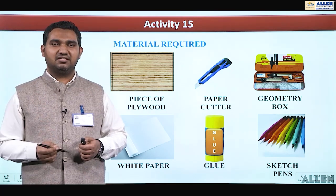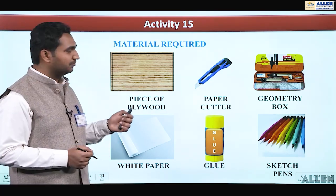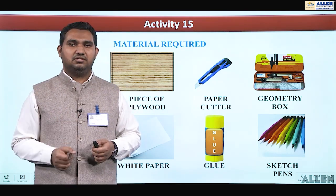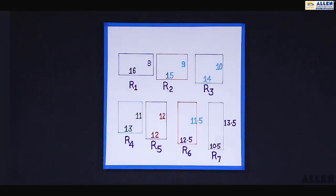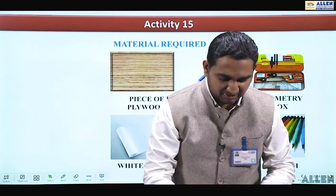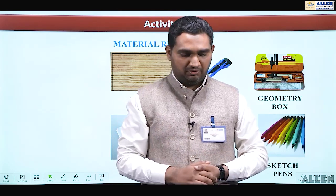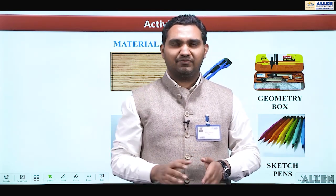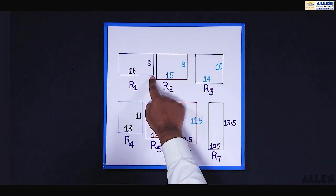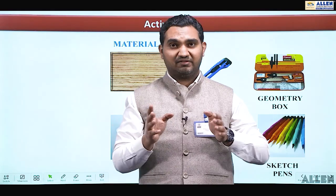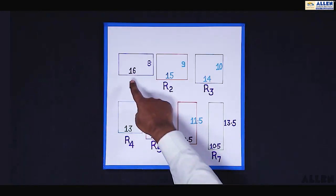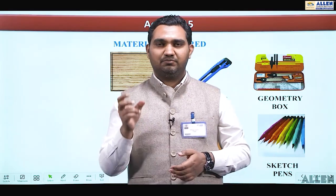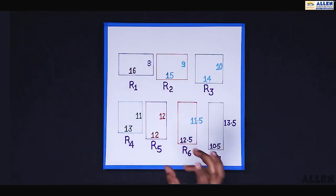Now we move on to the demonstration part. We have taken a piece of cardboard or plywood and pasted a white sheet of paper on it with tape and glue. Rectangle R1 has length 16 cm and width 8 cm. The perimeter is constant at 48 cm, so x + y = 24. In R1, 16 + 8 = 24; in R2, 15 + 9 = 24.